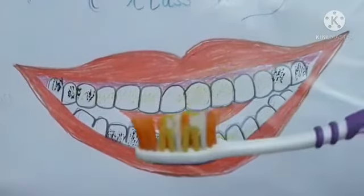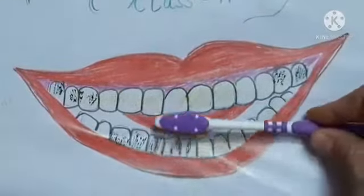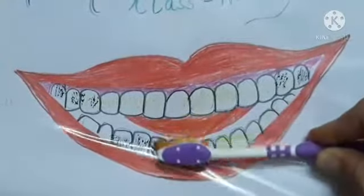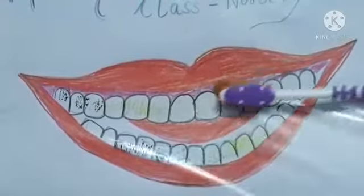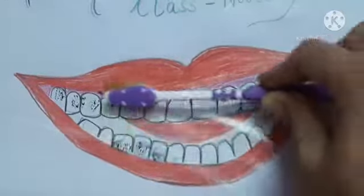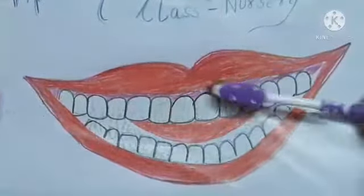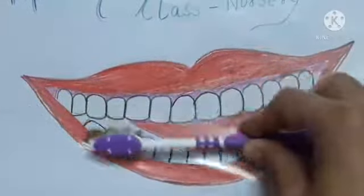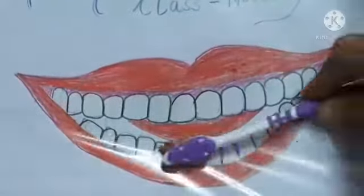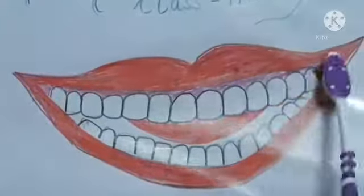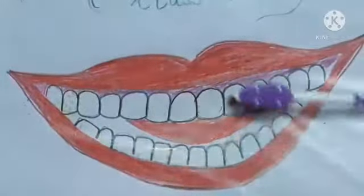Now take a brush, dab it into water, and brush it — clean it softly. Now you can see the whole plaque has vanished. Meanwhile, as our teeth are getting clean, let us sing the rhyme. Brush your teeth, brush your teeth, go round and round, up and down, go side to side, left and right, to make our teeth clean and bright.